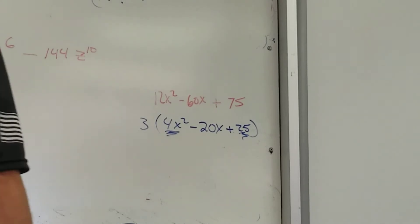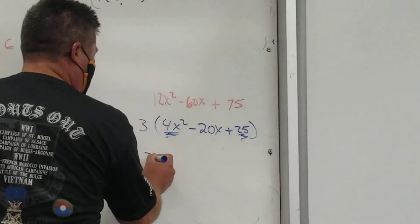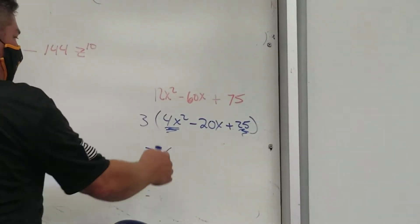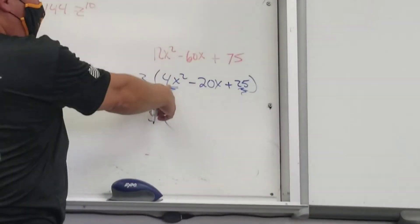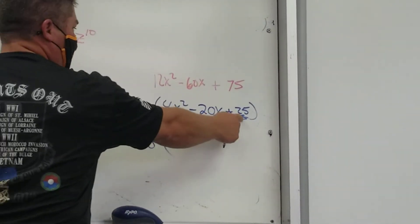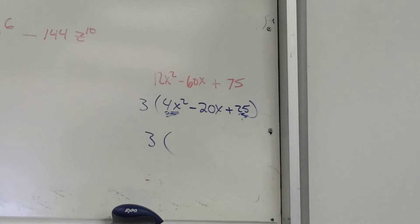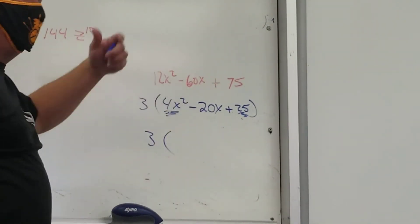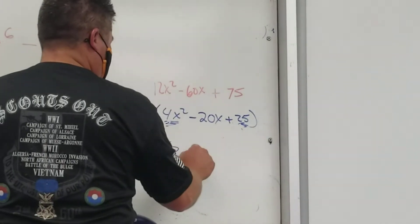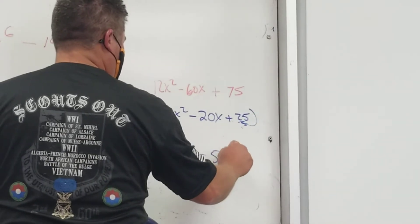I'll show you the box method works on this one, but let's just do it. So what should this be? By the way, does it work? What's the square root of that? 2x. What's the square root of that? 5. 2 times 5 is? 10. 10 doubled is? 20. Boom. We're good. It's 2x minus 5 squared. Done.